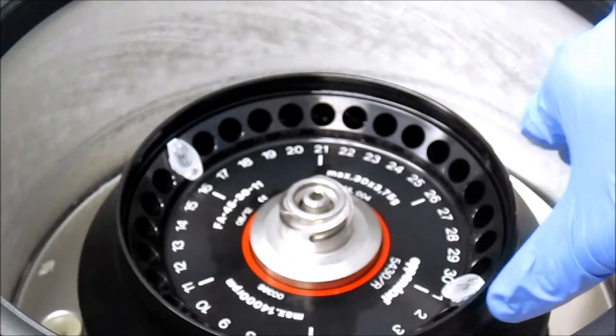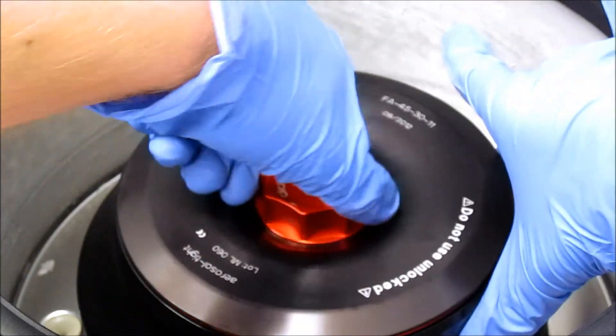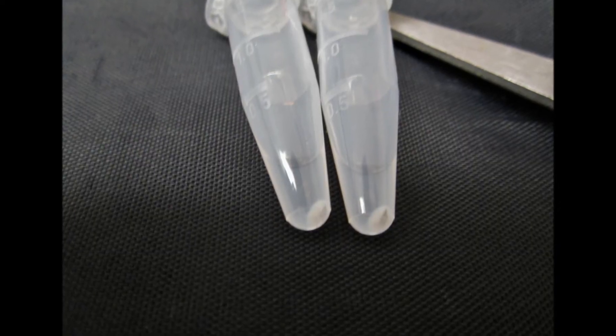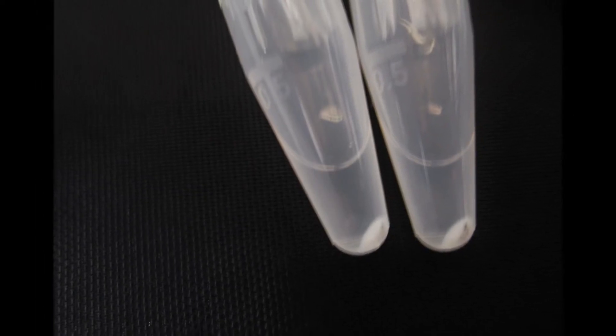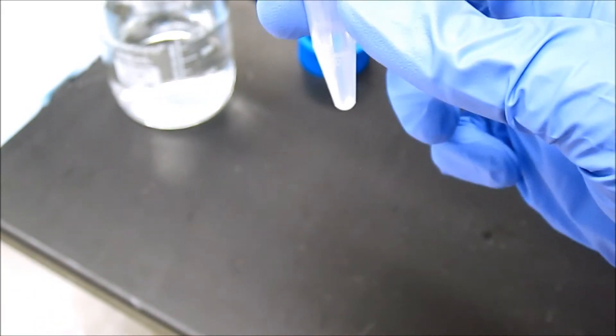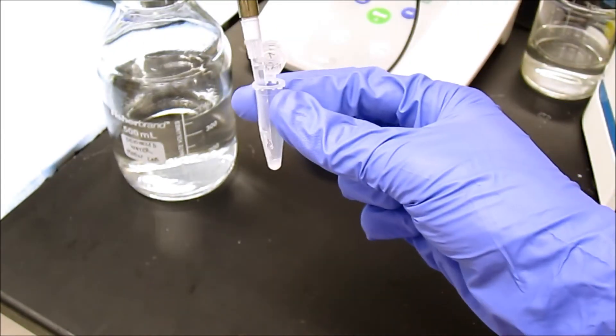The re-suspended liposomes are then centrifuged again using the same settings as before. There should again be a visible white pellet at the bottom of each tube. The washing and centrifugation step is repeated a third time.